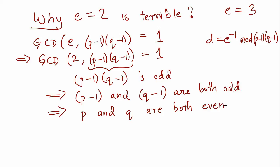But both p and q are primes, and both p and q are even, which means both p and q are 2. So if the value chosen for e is 2, that immediately restricts the value of p and q to 2 as well.